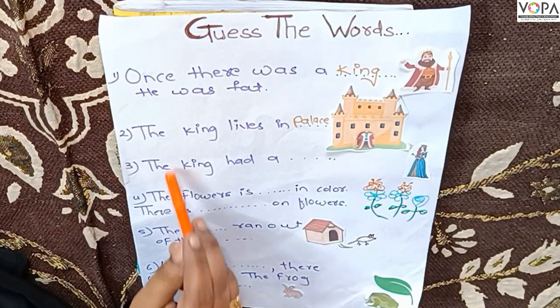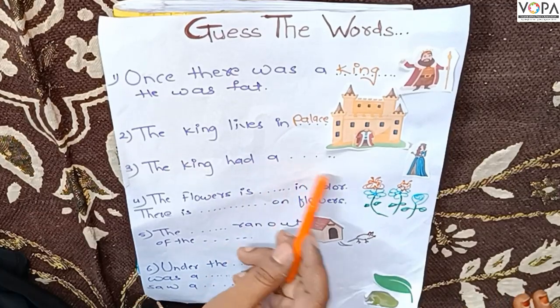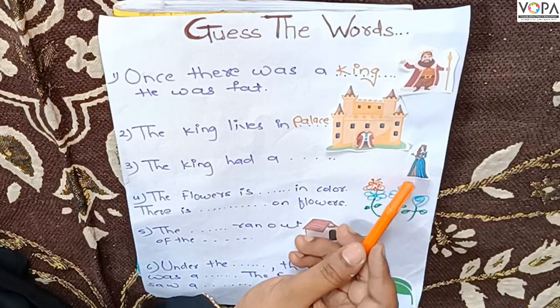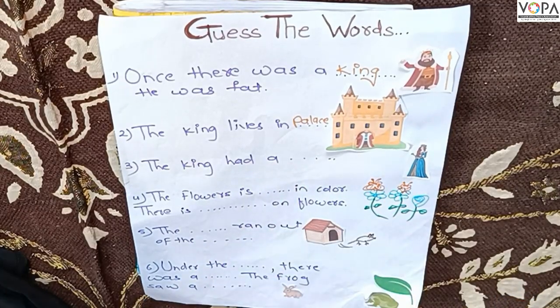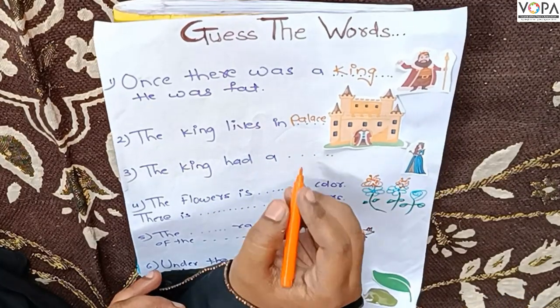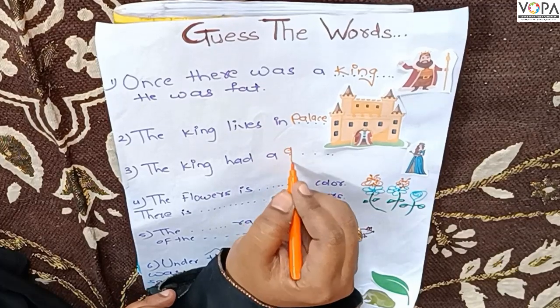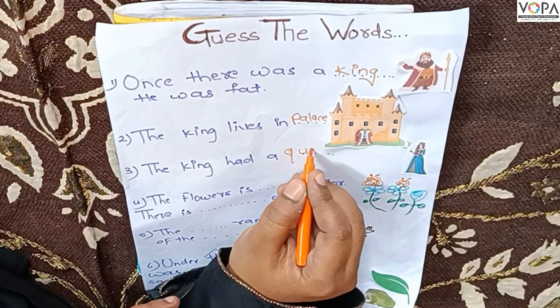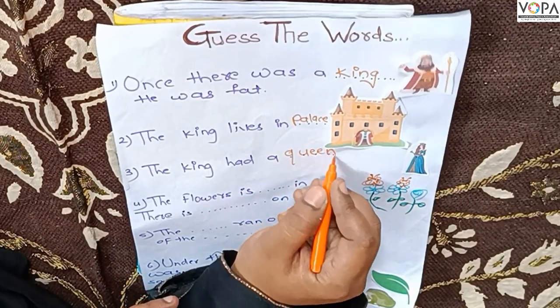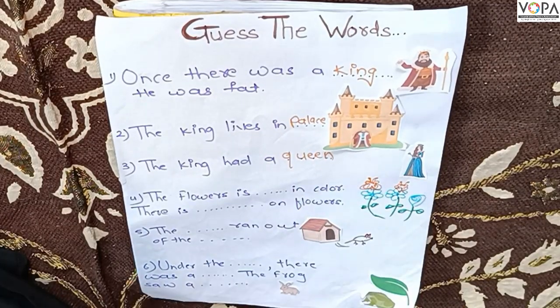The king had a blank blank. Who do you see here? Queen. Good. Who is this? Queen.